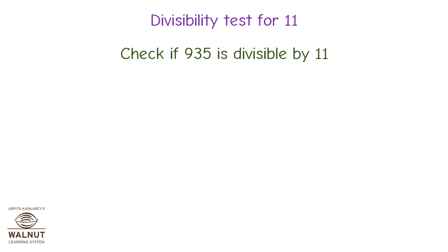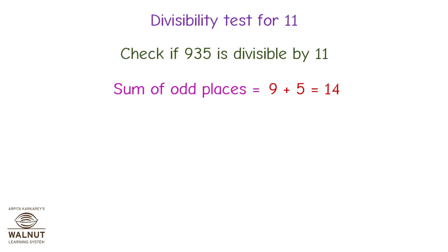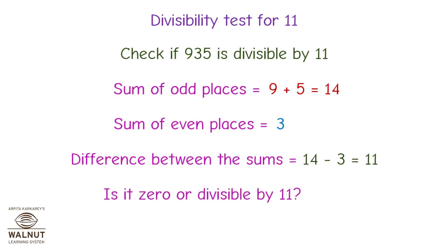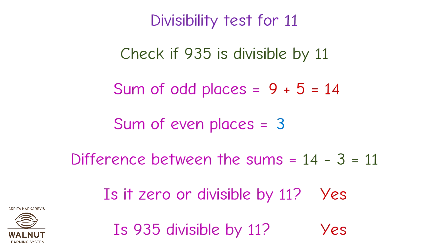Divisibility test for 11. Check if 935 is divisible by 11. Sum of odd places is equal to 9 plus 5, which is equal to 14. Sum of even places is equal to 3. Difference between the sums is equal to 14 minus 3, which is equal to 11. Is it 0 or divisible by 11? Yes! Is 935 divisible by 11? Yes!